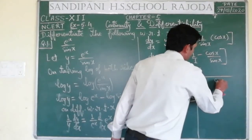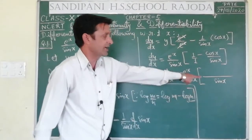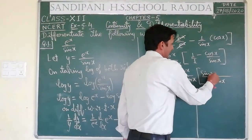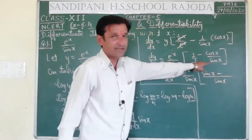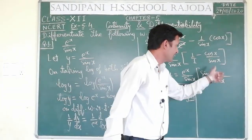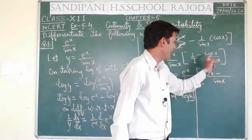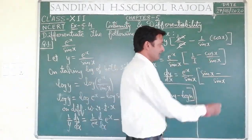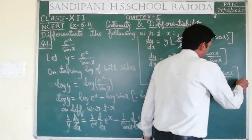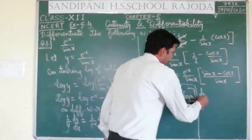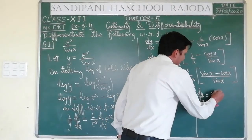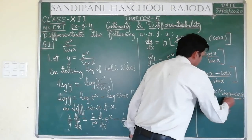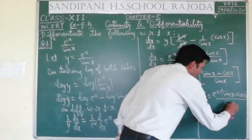अब यहाँ LCM लेंगे — LCM इसका sin x होगा. dy/dx = (e^x/sin x) · [(sin x - cos x)/sin x] = e^x(sin x - cos x) / sin²x.